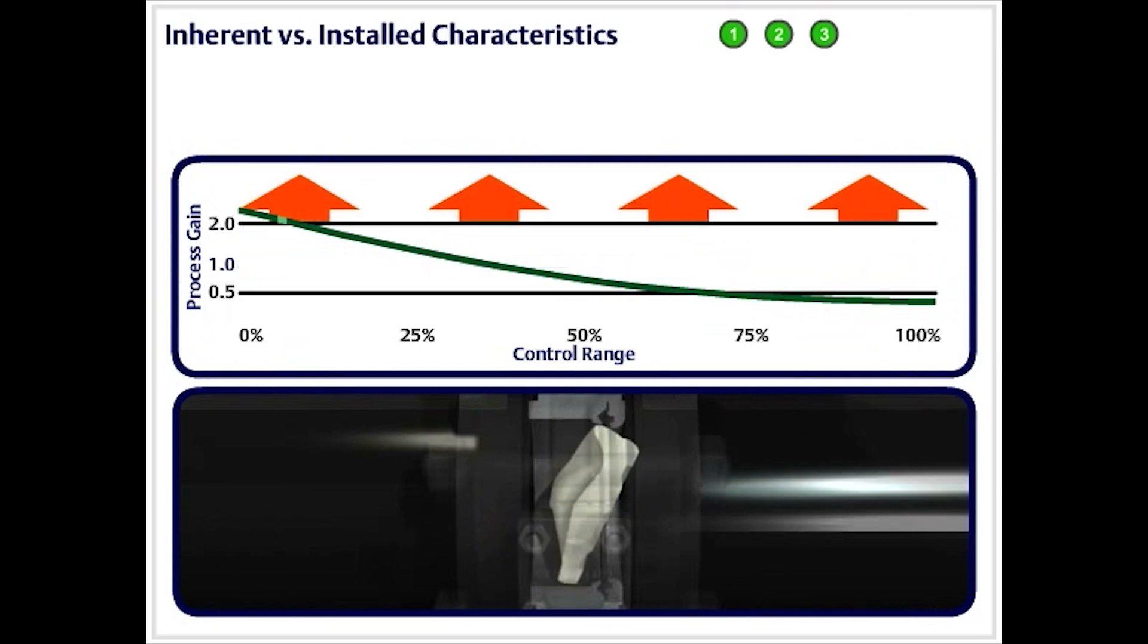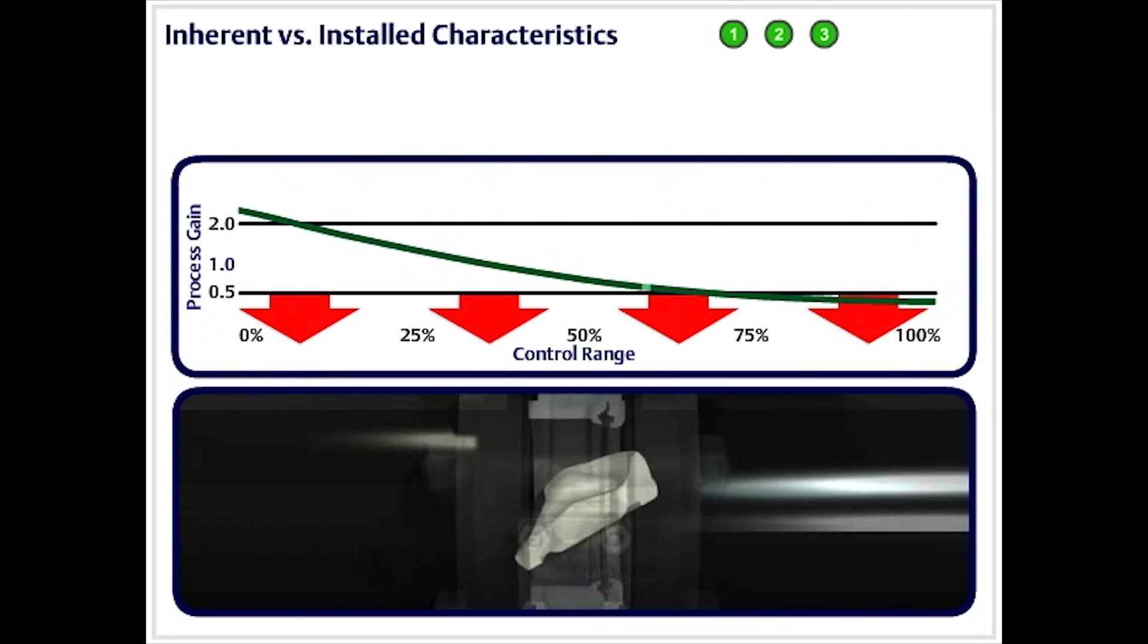Above a gain of 2, a valve loses control stability, because a small amount of valve travel causes a big change in flow. Below a gain of 0.5, valve response becomes too slow. That is, a change in valve travel causes little to no change in flow.